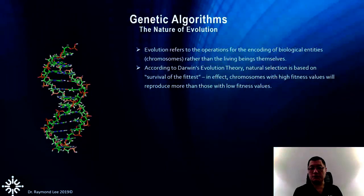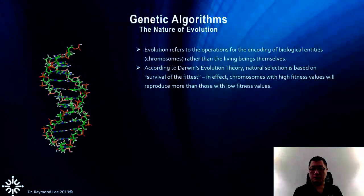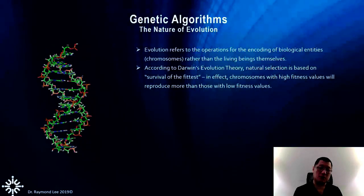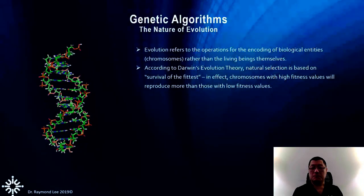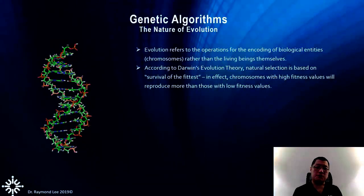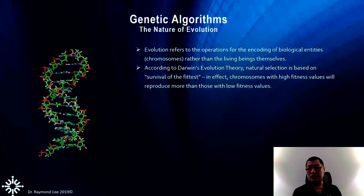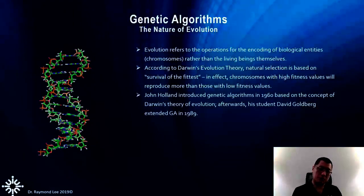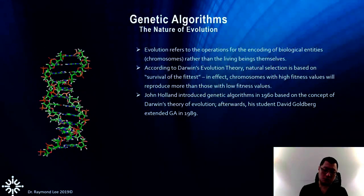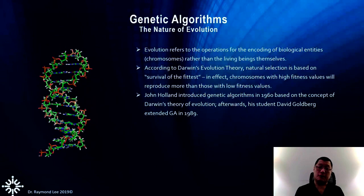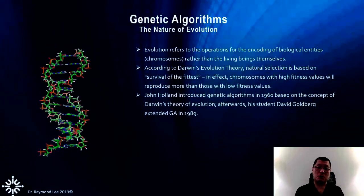In basic Darwin theory, proposed about a hundred years ago, he proposed two things. First, all living organisms including human beings improved over millions of years using what we call survival of the fittest — fitness to adapt to the environment. Darwin proposed two methods: chromosome crossover and mutation.